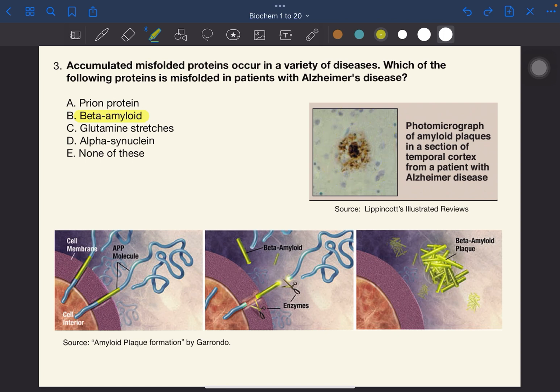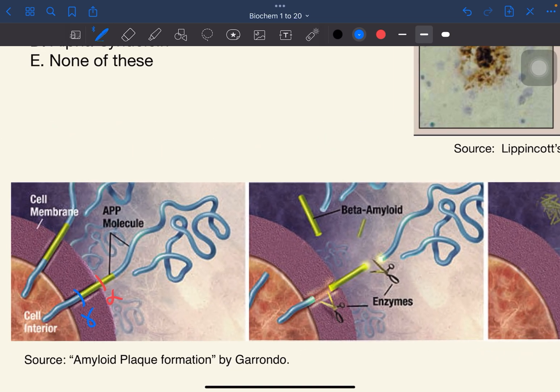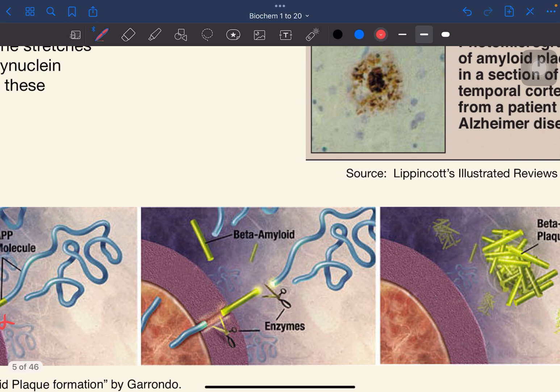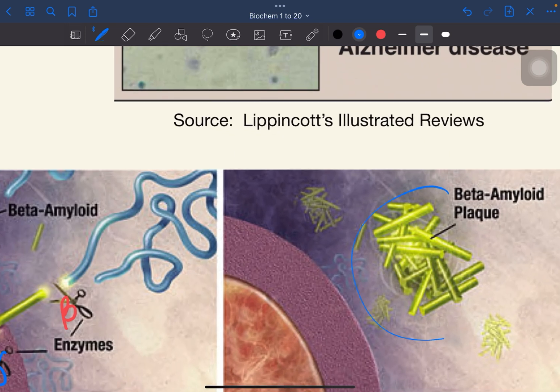Saan ba ang galing tong beta-amyloid? As you can see in this photo, this is the cell membrane of a neuron in the brain. And this molecule is called the amyloid precursor molecule. Yung APP, it is normally chopped by alpha and gamma secretase. They chop it here and the resulting fragments are soluble, so they do not cause any problems. However, if the APP is chopped by beta and gamma secretase, that's when we will have a problem. The resulting fragments are not as soluble, and these accumulate, which then form the plaques that we see here.